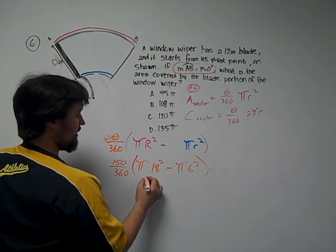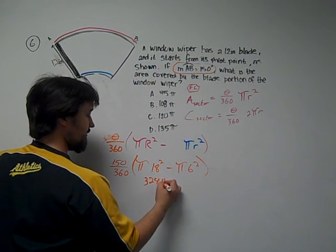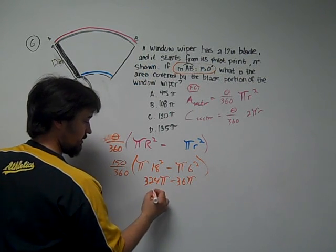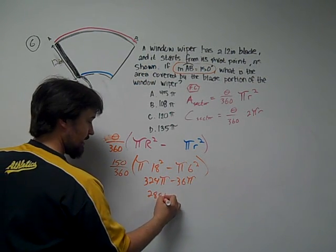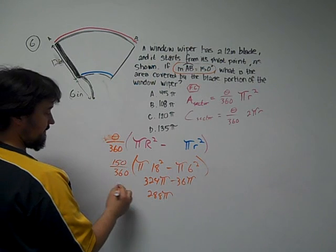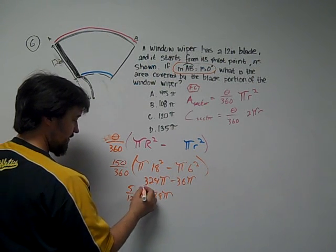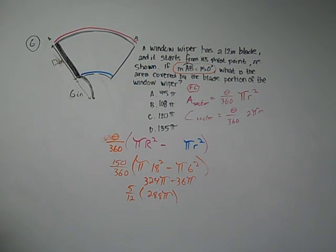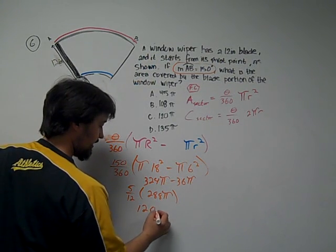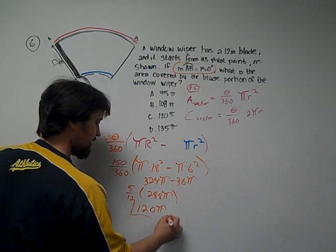Use a calculator from here, but 324 pi minus 36 pi. So 288 pi and 5 twelfths of that. I believe it's 120 pi. So 120 pi is our answer.